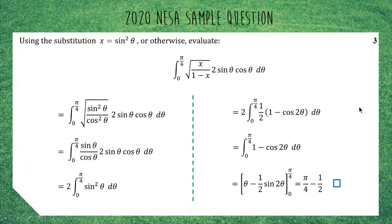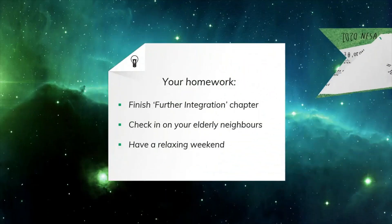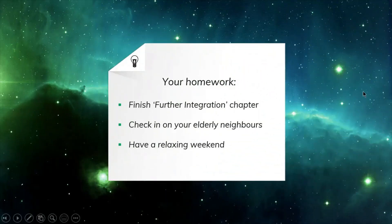Alright. That's it for today. So your homework for the rest of today or the rest of this week is to make sure that you are finished with the further integration chapter because as of Monday, we are onwards and upwards into statistics. Okay? Also, if you have some spare time this weekend, maybe check in on your elderly neighbors. Make sure they're okay. See if you can go to the shops for them. You never know. They might be doing it tough. Most importantly, in this very troublesome climate we're in, try to have a relaxing weekend. Take some time for your hobbies. Go for a walk. Catch up with less than 10 mates in an open, spacious arena. All right. That's it for me. Thanks for watching. I will see you guys later.